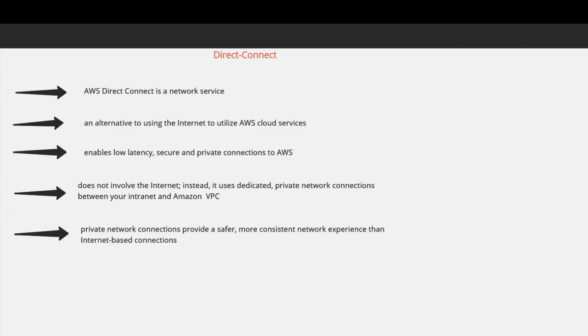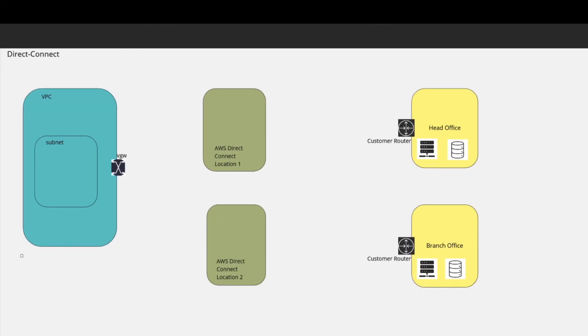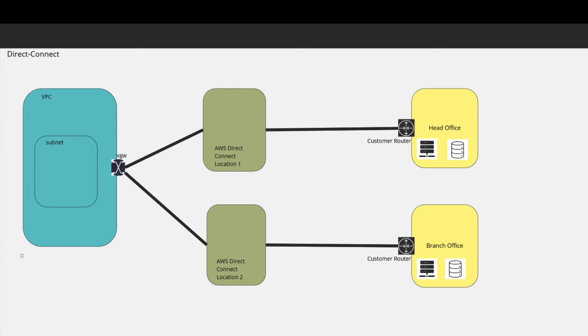There are multiple Direct Connect locations in many cities around the world, mostly handled by third-party providers. In this scenario, you have your VPC with a virtual gateway and your corporate offices — a head office and branch office — at two different locations. You can establish a Direct Connect connection from your VPC to the Direct Connect location and then to your head office.